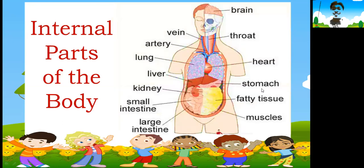So let's move to the internal parts of the body — we cannot see these parts. We will start with the brain. Actually there are two lobes of brain, so we call them brains. Throat. Heart — it's very important because it pumps blood to supply blood to all parts of our body and organs.